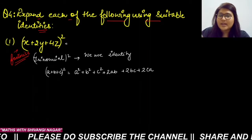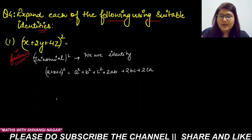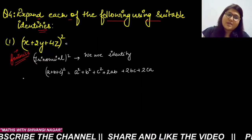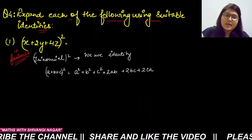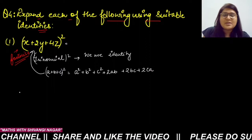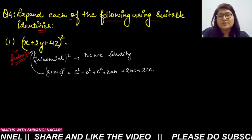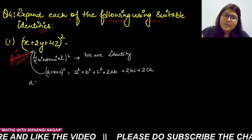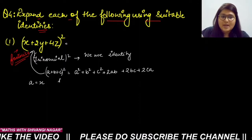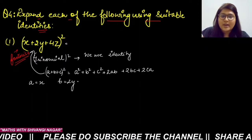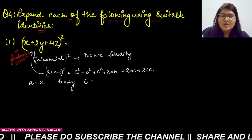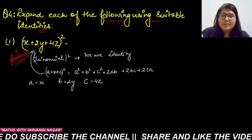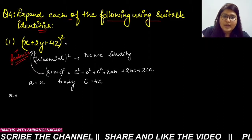We will use this identity and compare. For (x + 2y + 4z)², we compare with (a + b + c)². Here a = x, b = 2y, and c = 4z. Now put the a, b, c values into the identity.